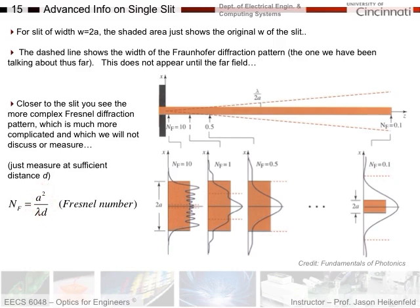the Fresnel number, as A squared, which is the half width of the slit, so 2A is the total width of the slit, so it's the radius of the slit,